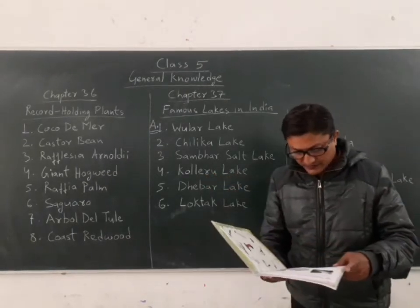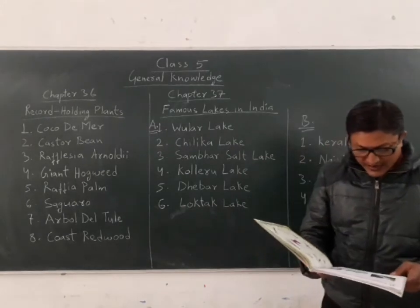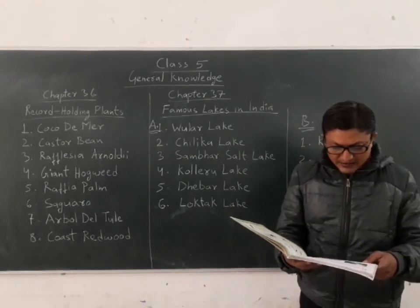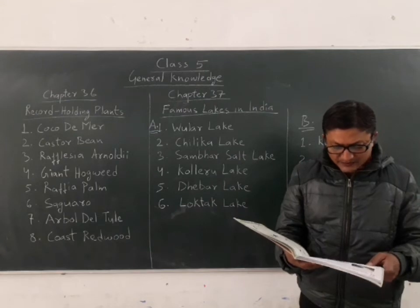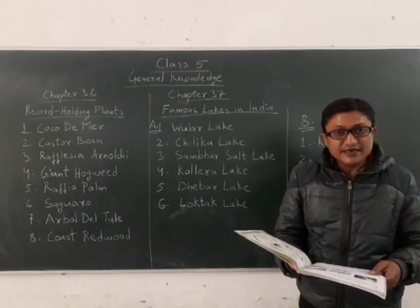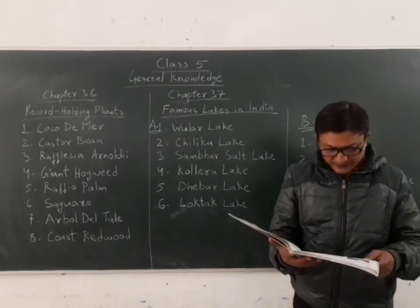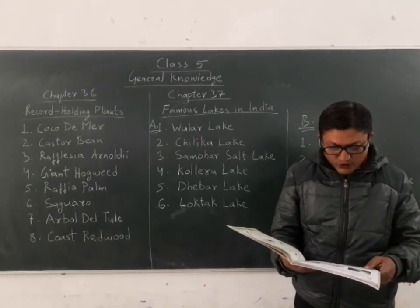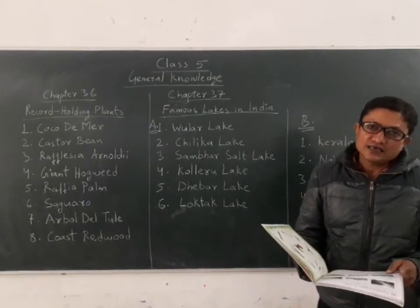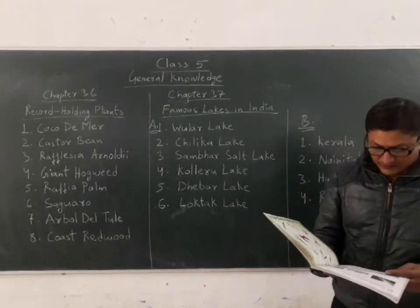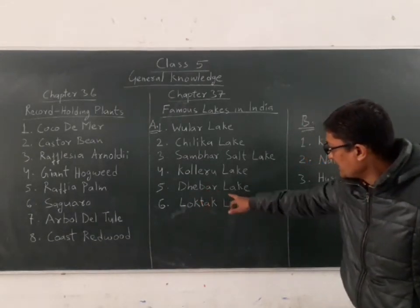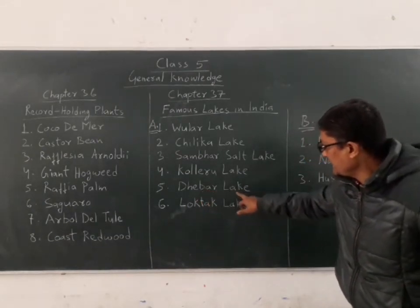Fifth: it is also known as Jaisamand Lake. It is the second largest artificial lake in Asia, located in the Udaipur district of Rajasthan. The answer is Dhebar Lake.